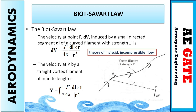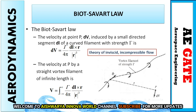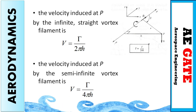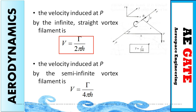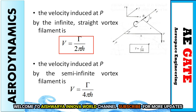This theory is applicable only for inviscid and incompressible flow. The velocity induced at point P by an infinite vortex filament can be written as V = gamma / (2 * pi * h). Similarly, if the velocity is induced at point P by a semi-infinite vortex filament, then V = gamma / (4 * pi * h). These are important formulas from which a few MCQ questions are asked.